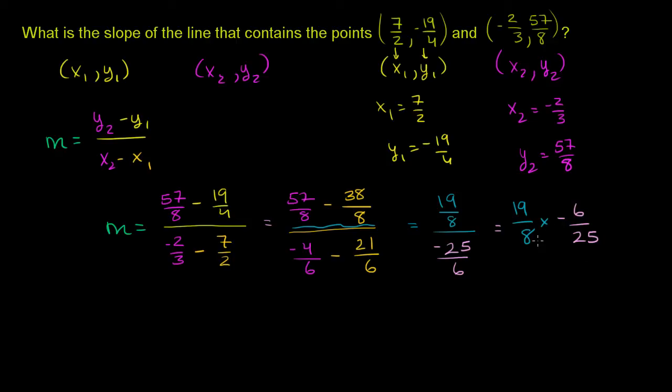And let's see, we can do some simplification right over here. The numerator and the denominator are both divisible by 2. So let's divide them both by 2. This becomes a 3, this becomes a 4.